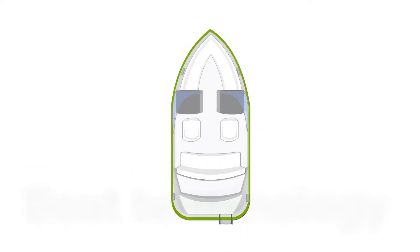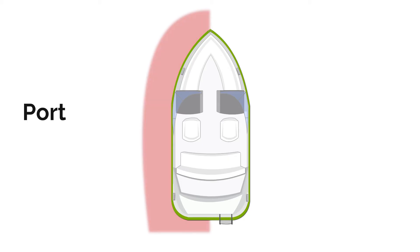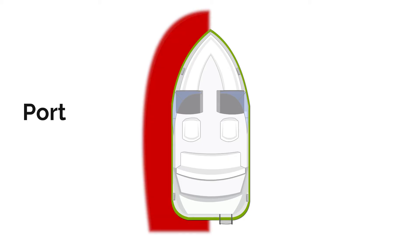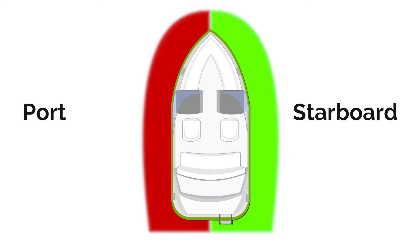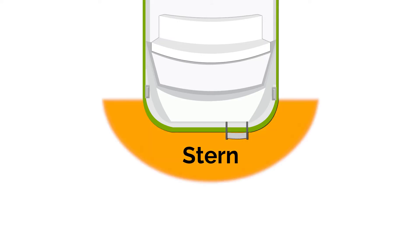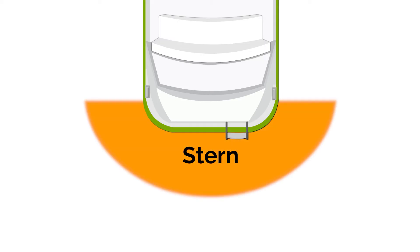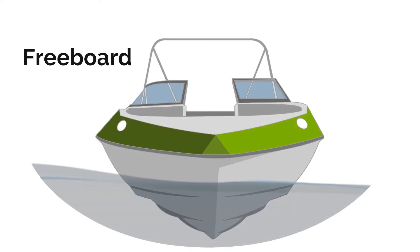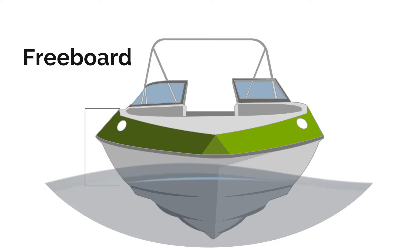Boat terminology: port, the left side of a boat facing forward; starboard, the right side of a boat facing forward; bow, the forward part of a boat; stern, the back part of the boat.